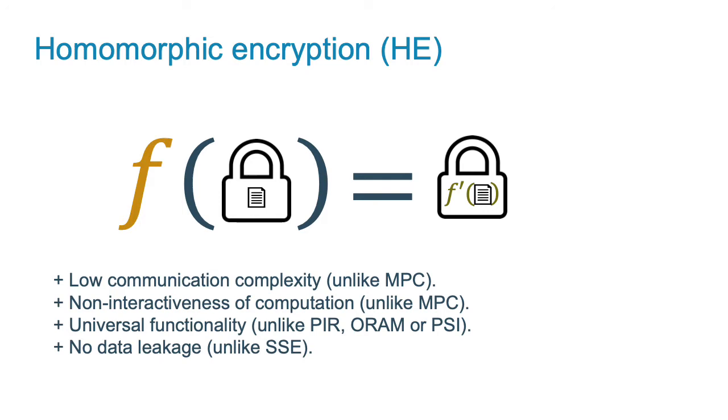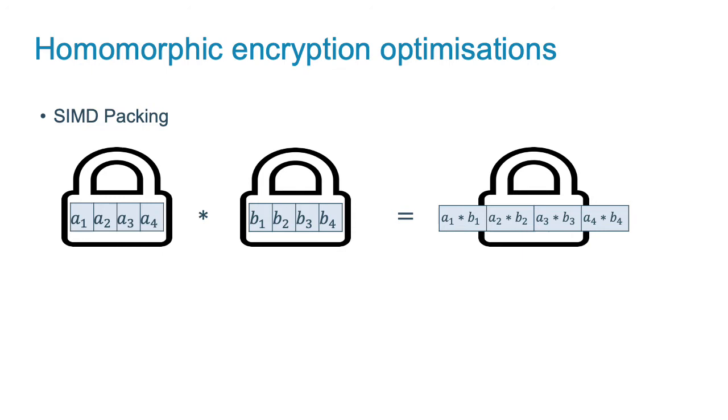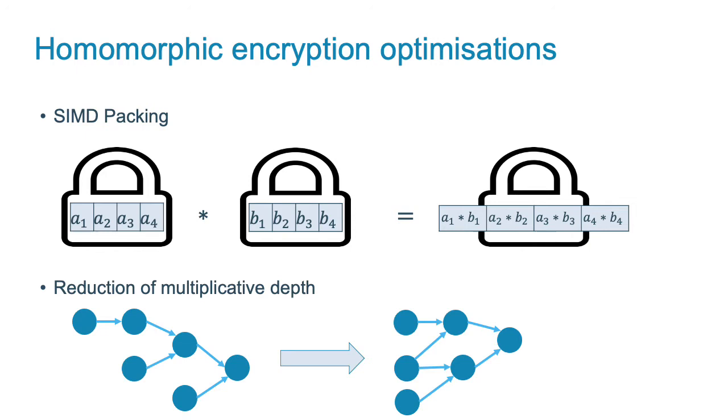The downsides of HE are running time and high ciphertext expansion rate. To alleviate these issues, the following optimizations are the most useful. First, it is possible to pack multiple data values into one plaintext such that every homomorphic operation applied on encrypted messages results in an operation applied on all these packed values simultaneously. This technique is similar to a parallel computation paradigm called single instruction multiple data or SIMD in short. Thus, the amortized running time and memory overhead per data value is reduced.